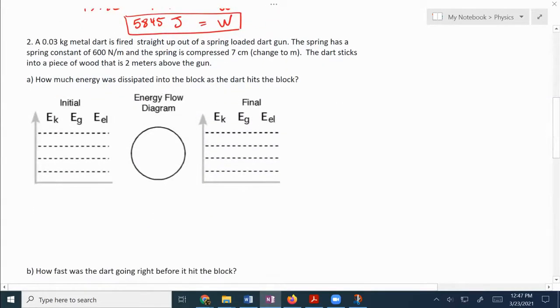Number two says a 0.03 kilogram metal dart is fired straight up out of a spring loaded dart gun. The spring has a spring constant of 600 newtons per meter and the spring is compressed seven centimeters, right, which we're going to need to change to meters. The dart sticks into a piece of wood that is two meters above the dart gun. How much energy was dissipated into the block as the dart hits the block? Okay, so let's start ourselves off here.